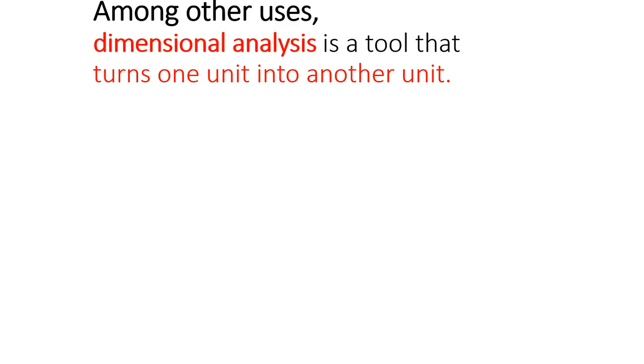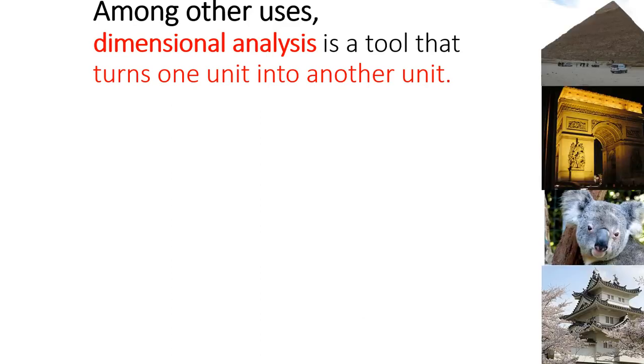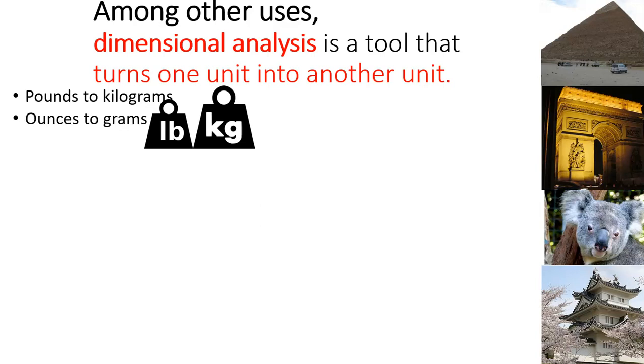So just to give you an idea of what dimensional analysis is, it's a tool that turns one unit into another unit and it's very simple. It's a good thing too because it turns out the United States is one of the only three countries in the entire world that does not use the metric system. So sometimes you do in fact have to convert from pounds to kilograms or from ounces to grams.